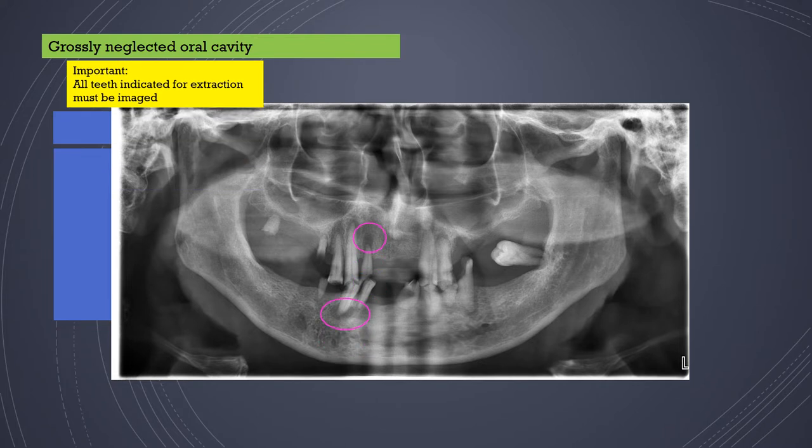Most of these teeth are indicated for extraction and all teeth indicated for extraction must be imaged. In this case, the doctor prescribed a panoramic radiograph because it covers a wide range of teeth and also gives an assessment of bone height so the patient can receive a denture afterwards.